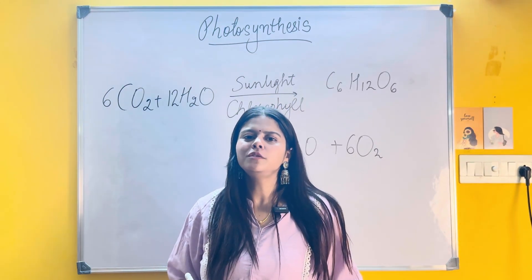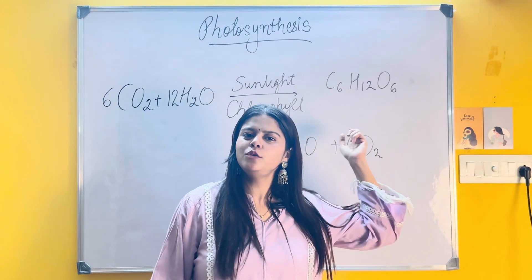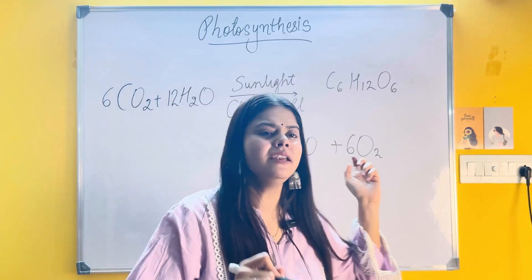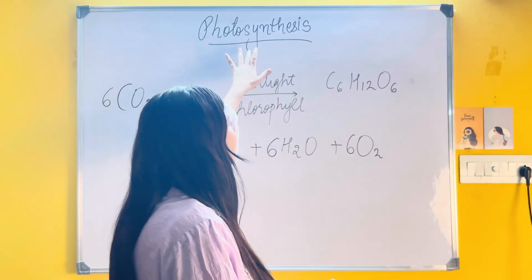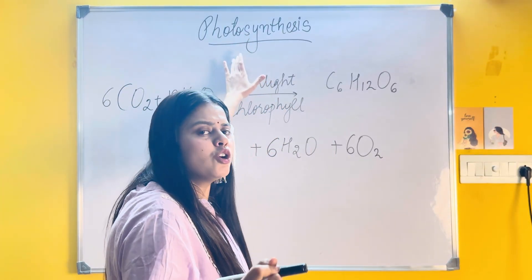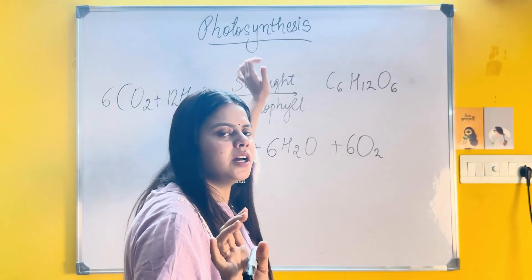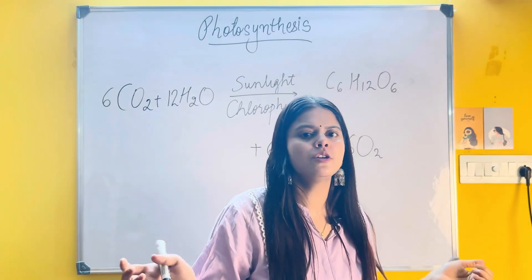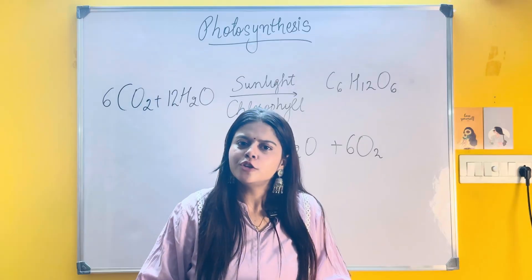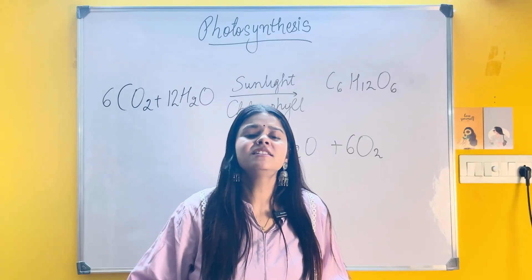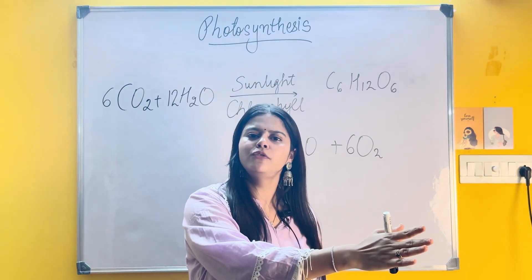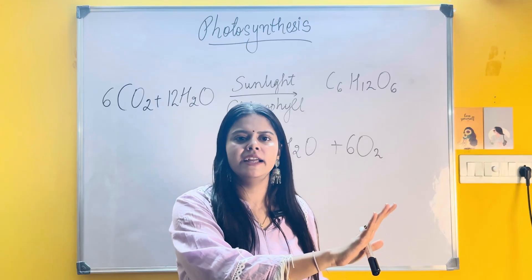Hello everyone. I am going to start with a new chapter in plant physiology for grade 10. The name of the chapter is photosynthesis. I am sure you all are familiar with the term photosynthesis — you have been doing this from 6th grade onwards. So what is photosynthesis? It is the process by which plants make their own food in the presence of sunlight.